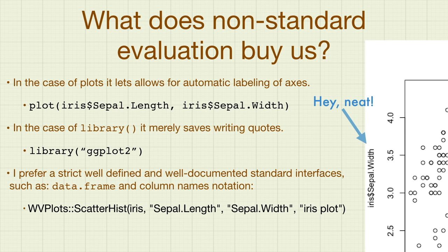I myself prefer a strict, well-defined interface. This is illustrated in this fragment from winvectorplots, another package we distribute. To build a scatter histogram of the iris data frame, we would say winvectorplots::scatterhist, passing iris as the data frame in the first argument. We would then, with later arguments, say what is to be done — in this case, plotting the sepal length and sepal width and titling the plot. Notice that all further arguments are within quotes because we're using values, not name capture. This would allow us to program over winvectorplots and make many plots as we vary the names of columns.